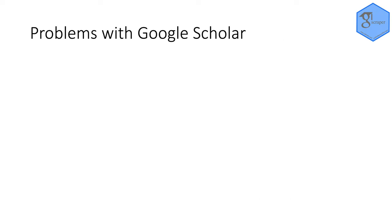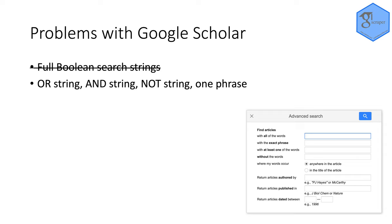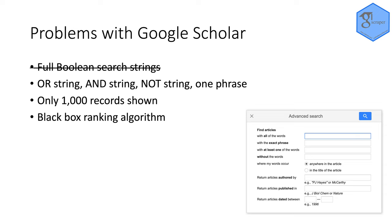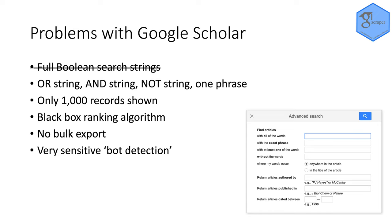It's not suitable as a single source of information in systematic reviews or other evidence syntheses for a number of reasons. Firstly, it doesn't support full boolean search strings, only basic strings. You can only see 1,000 search results and the order of those results is unknown, so if you have more than 1,000 results you can only see the first 1,000, determined by some black box ranking algorithm. There's also no bulk export from Google Scholar, which makes it difficult to integrate into review management platforms, and there's a very sensitive bot detection algorithm which makes it difficult to do anything in a patterned way.